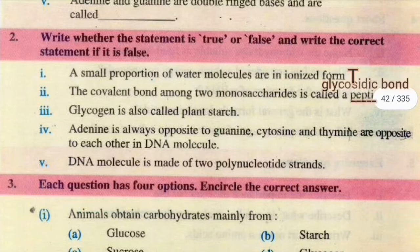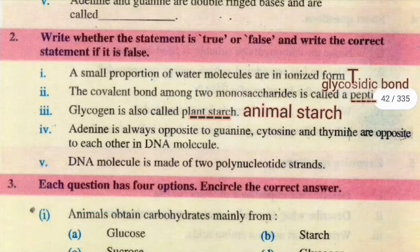Number 3, glycogen is also called plant starch. This is false. Glycogen ko animal starch kehte hain. Plant starch ki jagah pe animal starch aana chahiye.